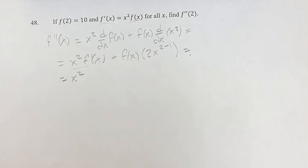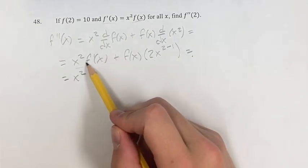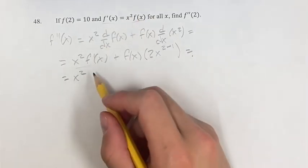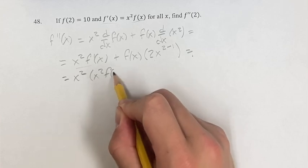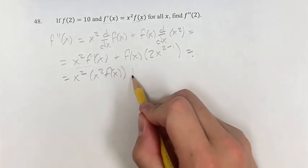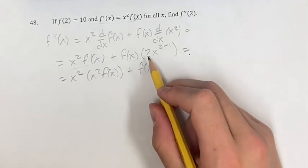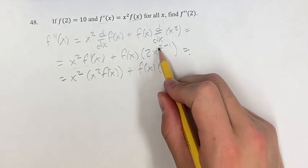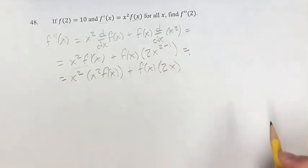So we have x², and then the derivative of f is equal to x²f(x), so we can plug that in. Plus f(x) times 2x, since x to the 2 minus 1 is x to the 1, which is just x.